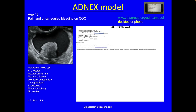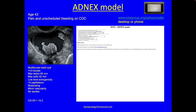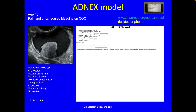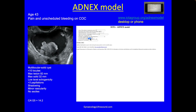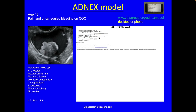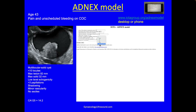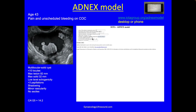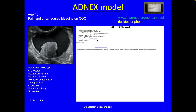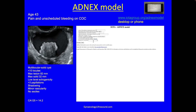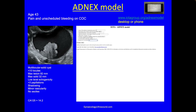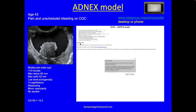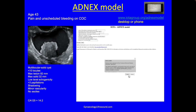The maximum diameter of the lesion was 82. Maximum solid component, 32. Not more than 10 locules. More than three papillations. Yes, acoustic shadowing. No ascites. And a CA125 — you don't need this, but it makes it a bit clearer.